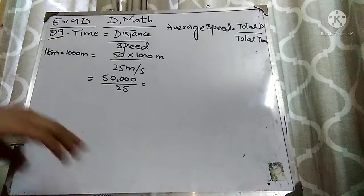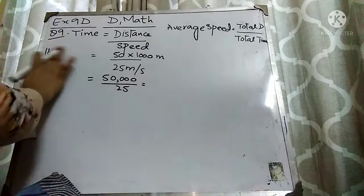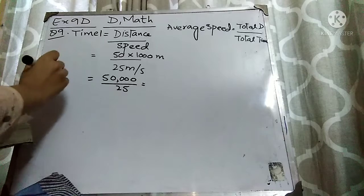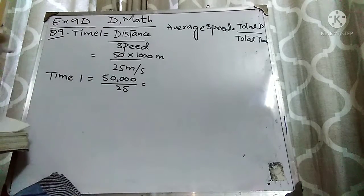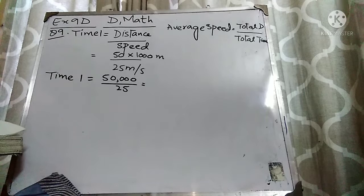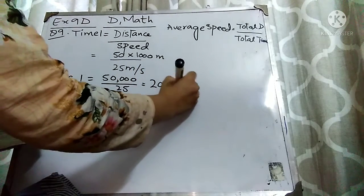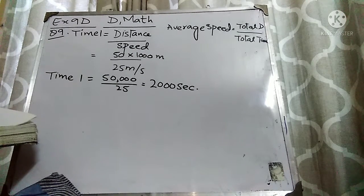When I divide 50,000 by 25, I will get the time. I am giving it the name Time 1. So 50,000 divided by 25 equals 2000. So 2000 seconds is Time 1. Now we have found Time 1.